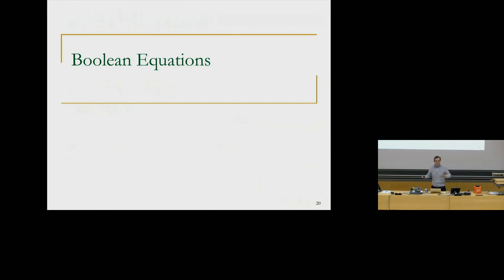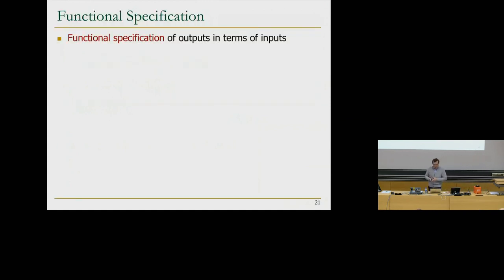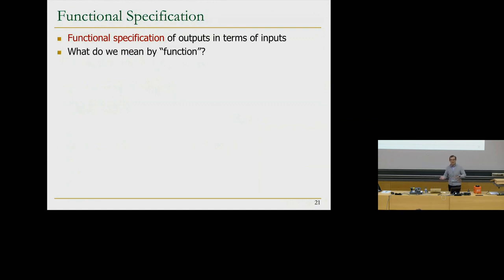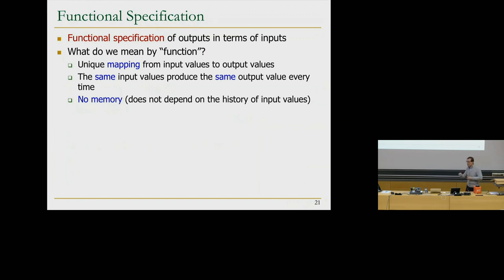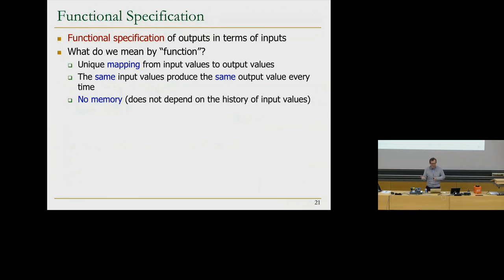A combinational logic circuit consists of Boolean equations, which we call the functional specification. Essentially, a Boolean equation is a functional specification of the circuit — outputs expressed in terms of inputs. A function is a unique mapping of inputs to output values: the same input produces the same output every time. That's a deterministic function. Outputs don't depend on the history of input values — only on the inputs applied right now.